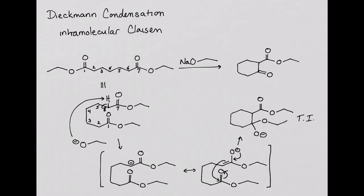In the final step, the carbonyl reforms, kicking off the leaving group to form the product. This product is a beta-keto ester, just like the product of other Claisen condensations.